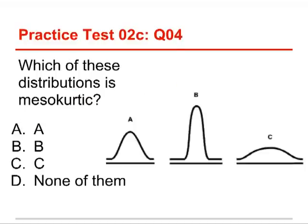Number 4. Which of these distributions is mesocurtic? You have to choose A, B, C, or none of them. Well, in this case, the answer is A. A is a normal distribution. It's a bell curve. And that is mesocurtic.